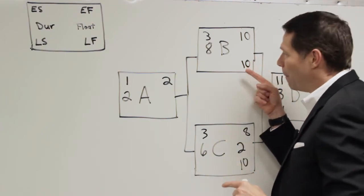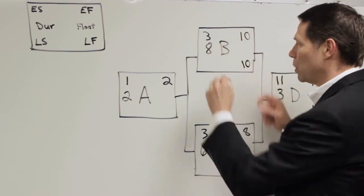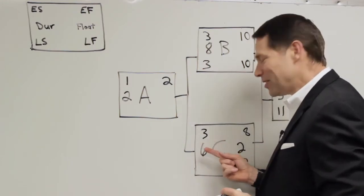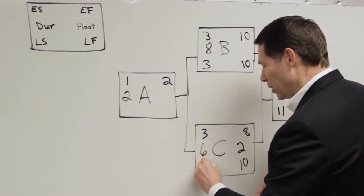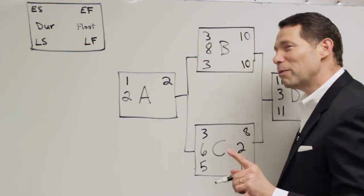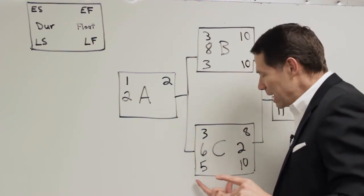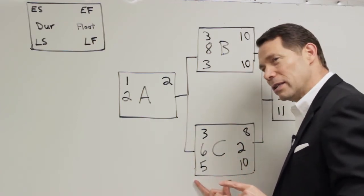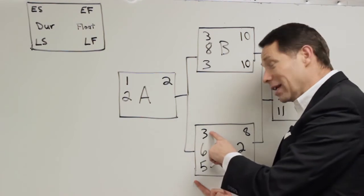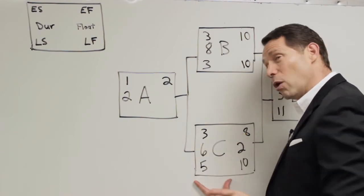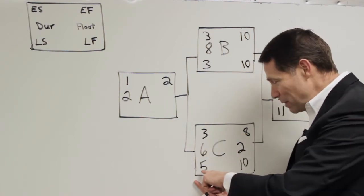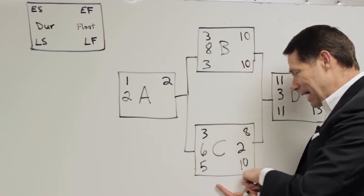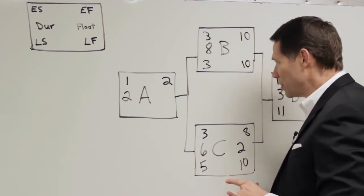I take that 10 minus the eight. That's two plus one goes to three. I take the 10 minus the six is four plus one goes to five. Now remember before when I said, if you start it right here, when does it end? It starts at three, it ends at eight. Or we could delay two days. Well, guess what? Five and 10. So that's the idea. That's exactly how it works.